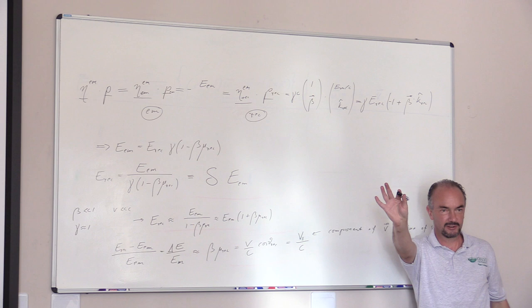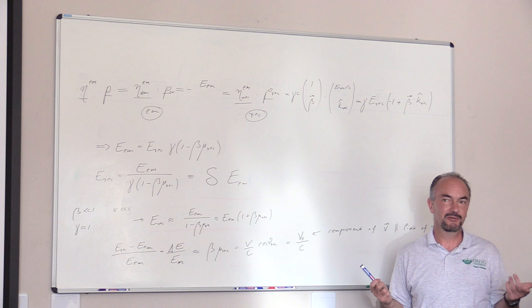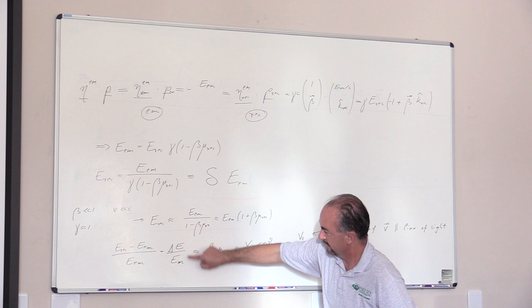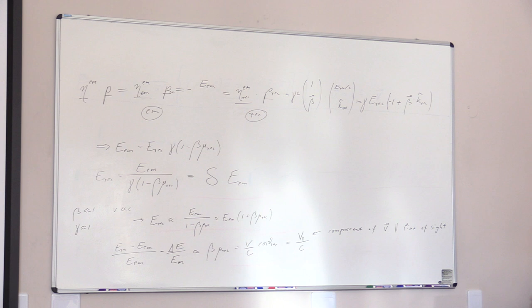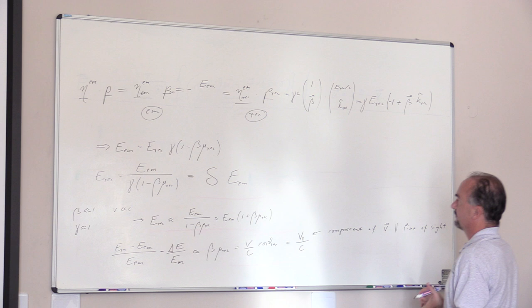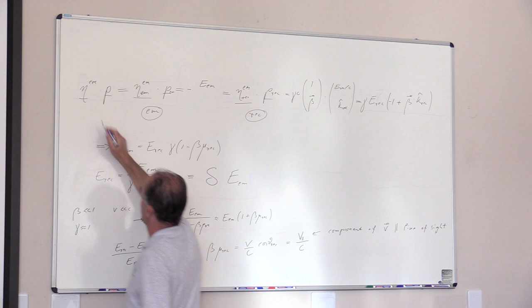I'm sure this is something that you have already seen with non-relativistic Doppler shift. So if V is much less than C, then the relative energy change is simply V parallel over C. Now we have calculated our Doppler shift here, considering the emission frame velocity and momentum.